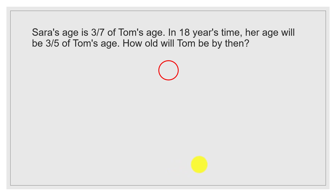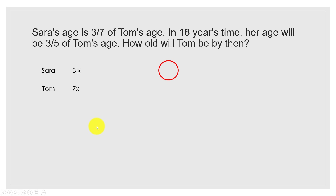Now let's solve the same problem using algebra. There is a minor error on screen, so disregard that for now. Since Sarah's age is 3/7 of Tom's age, the ratio is 3 to 7, so we represent Sarah's age as 3x and Tom's age as 7x. In 18 years' time, Sarah's age will be 3x plus 18 and Tom's age will be 7x plus 18.